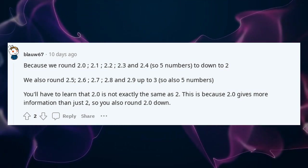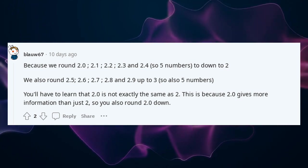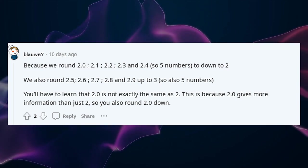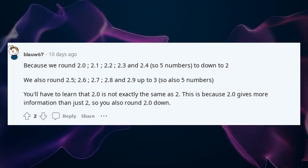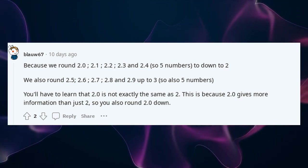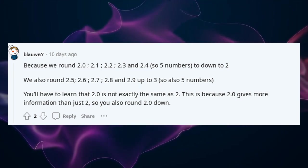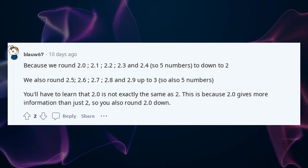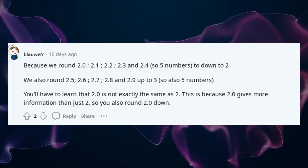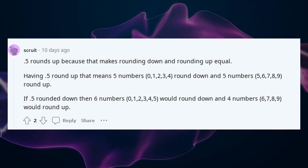Because we round 2.0, 2.1, 2.2, 2.3, and 2.4 — 5 numbers — down to 2, we also round 2.5, 2.6, 2.7, 2.8, and 2.9 — also 5 numbers — up to 3. You'll have to learn that 2.0 is not exactly the same as 2, because 2.0 gives more information than just 2, so you also round 2.0 down. 0.5 rounds up because that makes rounding down and rounding up equal.